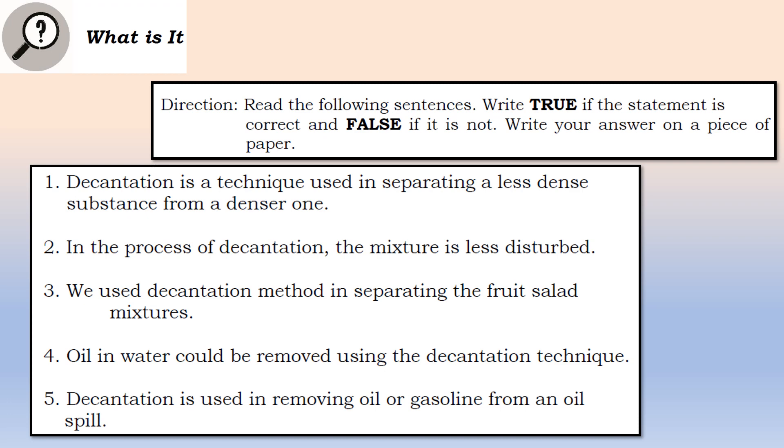Number three, we use decantation method in separating the fruit salad mixture. Gumagamit tayo ng decantation method sa pamamagitan ng paghihiwalay ng mga sangkap ng ating fruit salad. Number four, oil in water could be removed using the decantation technique. Yung oil daw na naghalo sa water ay pwede natin ma-remove sa pamamagitan ng decantation. At number five, decantation is used in removing oil or gasoline from an oil spill. Ginagamit daw natin yung decantation sa pag-remove ng mga oil or ng mga gasolina sa panahon na nagka-oil spill.